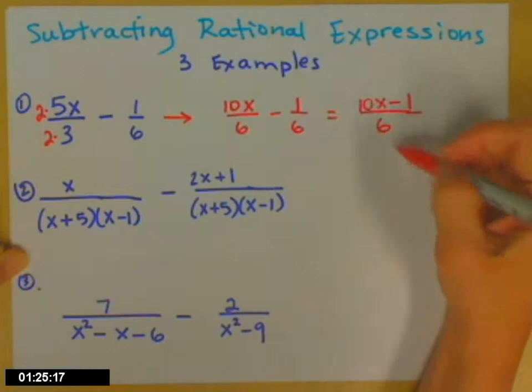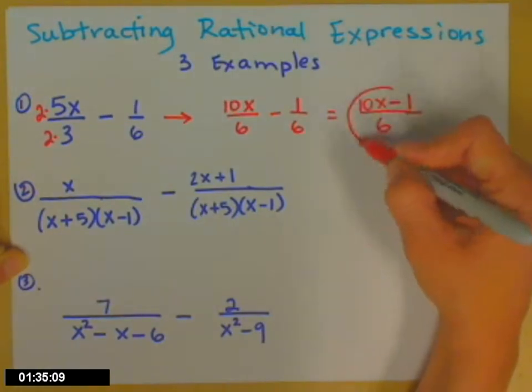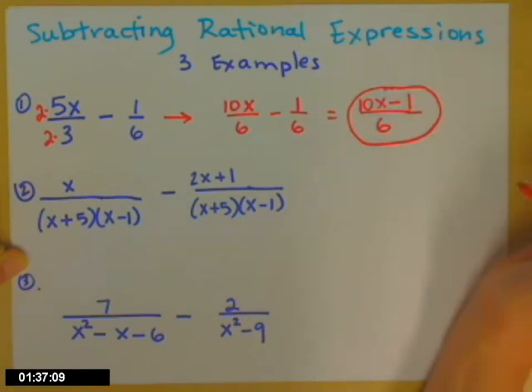The 10 and the 6 can't reduce because even though they share a common factor of 2, 2 is not actually a factor of the numerator. It doesn't go into the negative 1 over here. This is as tidy as it can get. That's the final answer.